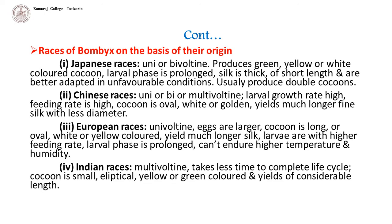European races: they are univoltine. The eggs are larger. Cocoon is long or oval, white or yellow colored. They yield much longer silk. Larvae have a higher feeding rate. Larval phase is prolonged. They cannot endure higher temperature and humidity.